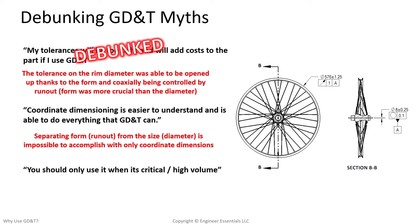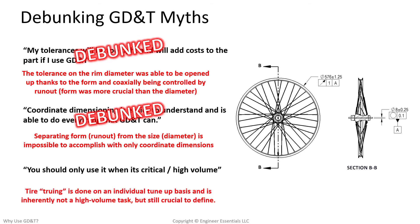Not to mention that checking radial trueness using an indicator on a truing stand is how someone is supposed to inspect runout anyway. We often find that students are already inspecting parts using GD&T controls without even knowing it. Lastly, we have seen students only use GD&T when parts are critical or high volume. Using the bike tire as an example, truing a tire is not a high-volume operation — it's often done as a quick maintenance task. It's not critical in the sense that it's going on an airplane or the International Space Station, but yet GD&T helps us better understand the functional requirements of this part.